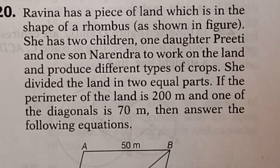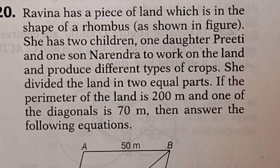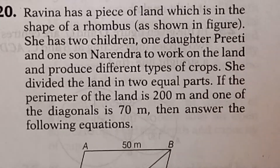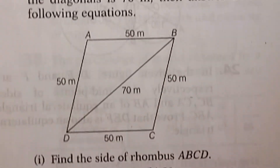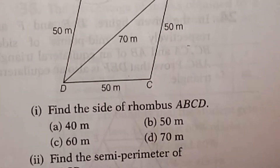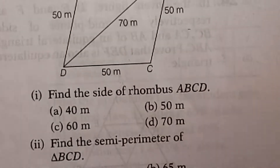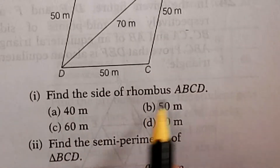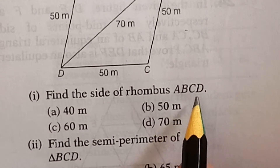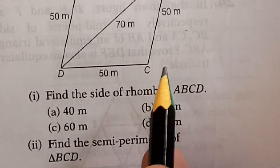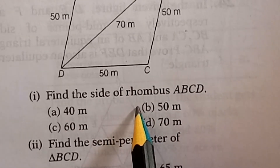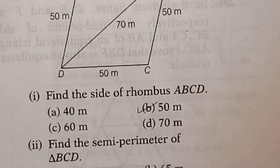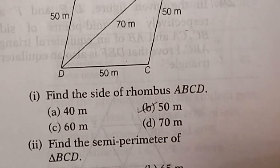The side will be perimeter divided by 4, which is 50 meters. You can see this in the diagram. The first question is: find the side of the rhombus. Since the perimeter is 200, the side will be 200 divided by 4, which equals 50 meters.